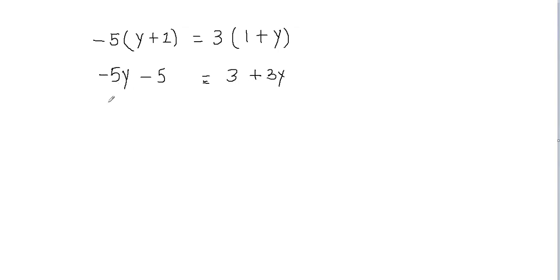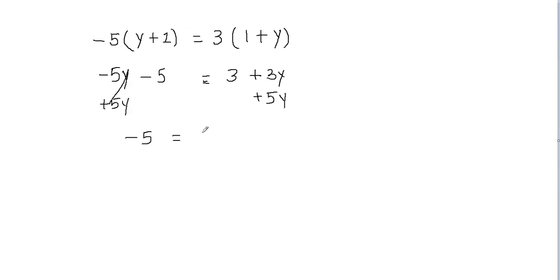To eliminate negative 5y, I just have to add 5y on the left hand side as well as the right hand side, because we need to balance the equation — whatever we do to one side, we do the same thing to the other side. We can only combine like terms, so 3y plus 5y gives me 8y.